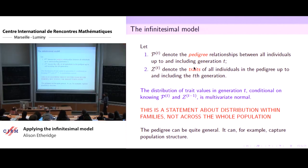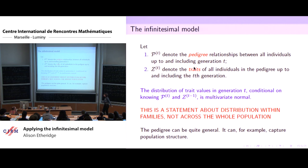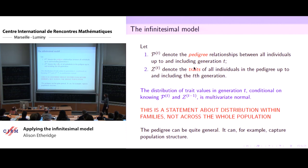The pedigree can be very general. This comes back to some of the questions asked at the end of Amandine's talk — it can capture things like population structure, generated using selection of traits in previous generations. But what's crucial is that within families, we will nonetheless have this multivariate normal distribution.